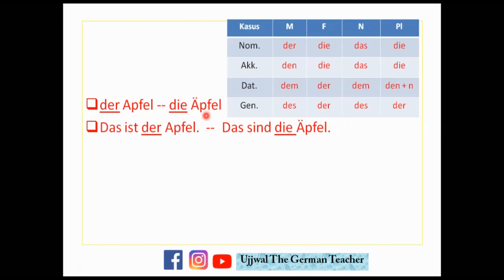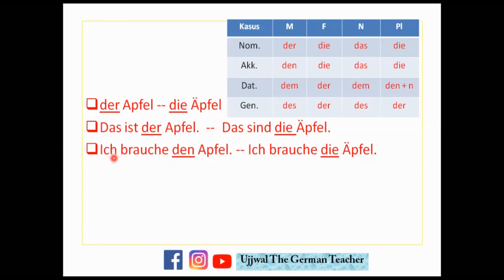Let's see the nominative examples: 'Das ist der Apfel' — that is the apple. For plural: 'Das sind die Äpfel.' Moving to the accusative case: 'Ich brauche den Apfel' — I need the apple. It is 'den' because Apfel is masculine and we are in the accusative case. For the plural: 'Ich brauche die Äpfel' — it remains 'die'.